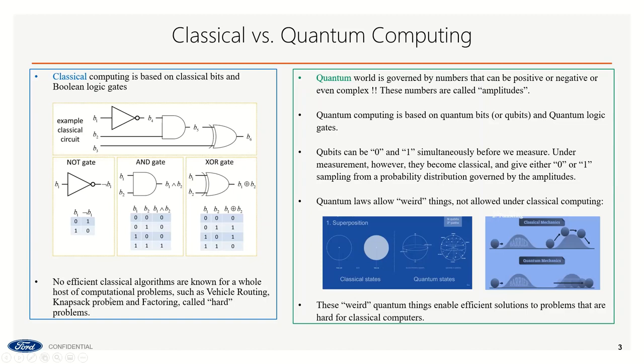Before going to quantum mechanics, just a last comment: when I say hard problems, I will try to define them at least semi-formally. For example, the vehicle routing problem, the knapsack problem, the factoring problem, the subset sum problem — these are examples of hard problems. They are hard in the sense that if you try to solve them using your classical computer and you increase your input size, then the resource — either in terms of time or in terms of spatial resource — grows quite drastically.